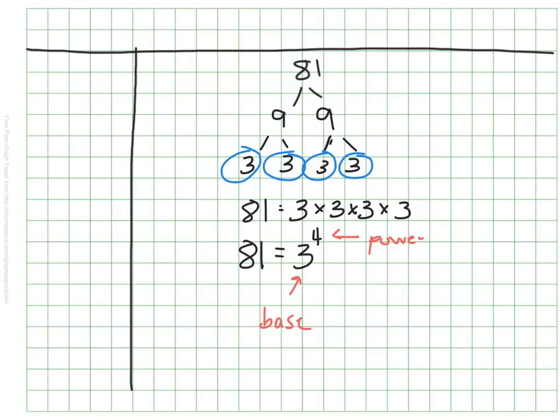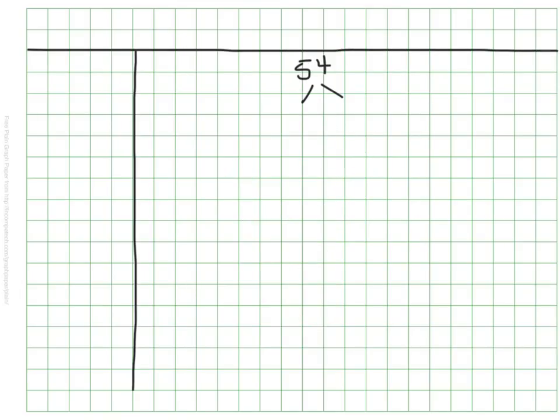Let's do one more of these before we try something else. Go ahead and do the prime factorization of 54 and then write it more efficiently using exponents. Remember as you do this that you might choose two different numbers to start with than I do because there are multiple factor pairs to make 54, but in the end we should come to the same answer.